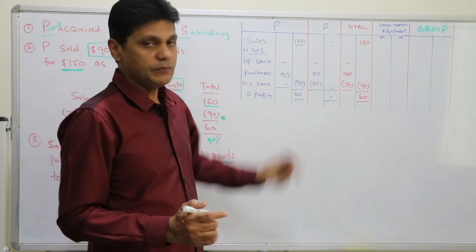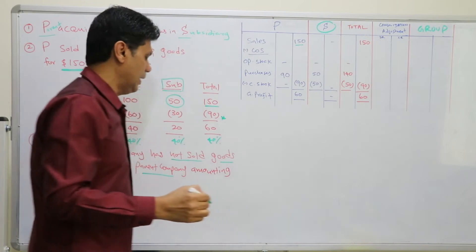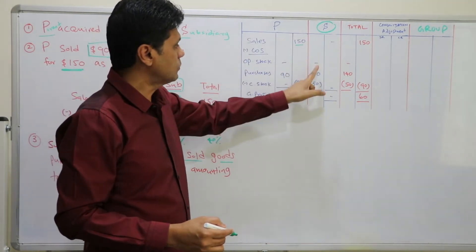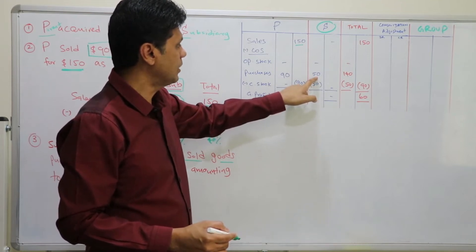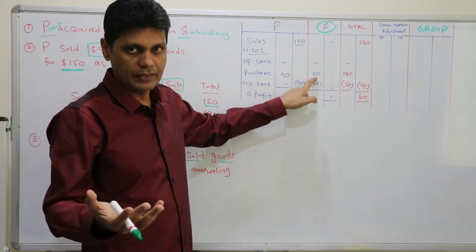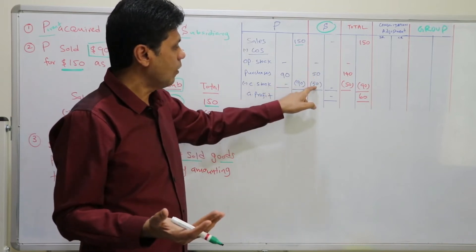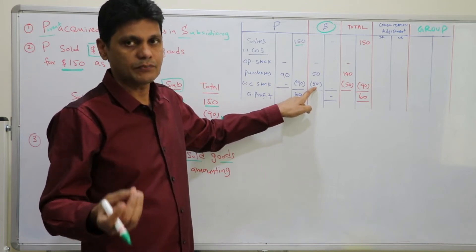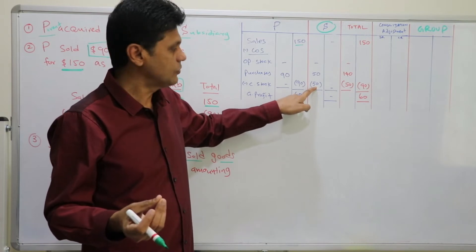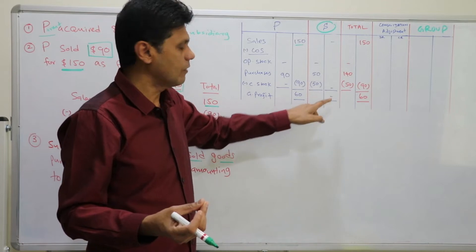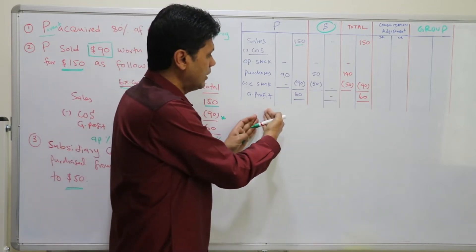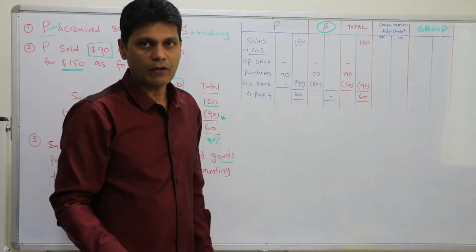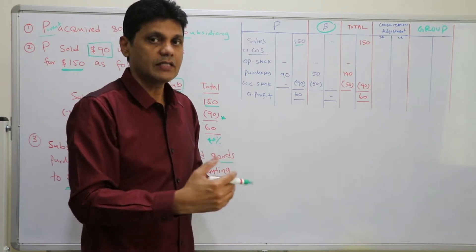For the subsidiary company: there are no sales, so sales are zero. Opening stock is zero, purchases from its parent company are $50, and closing stock is also $50 because those goods have not been sold — they are lying in the subsidiary's books. Therefore cost of sales is zero and the subsidiary's profit is zero. So parent company made $60 profit; subsidiary made nothing.